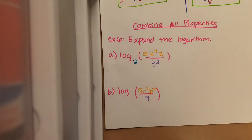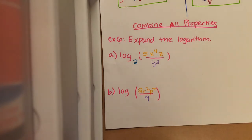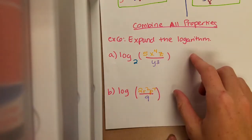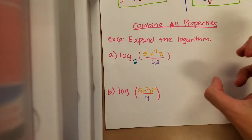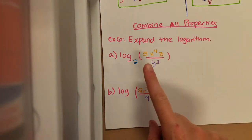Now we are going to be combining all the properties that we have discussed in the section thus far. We will be using the product property, the quotient property, and the power property. This one, like we've been doing, we are going to be expanding the log into several logs.